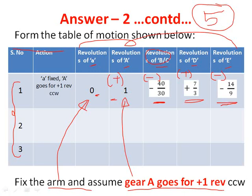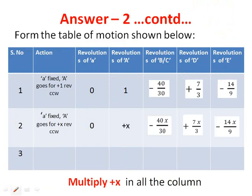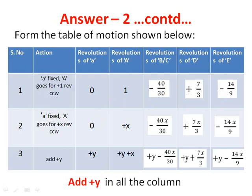This completes the first step. For the second step, multiply every element in the row by X: 0×X = 0, 1×X = X, −40/30×X = −40X/30, +7/3×X = +7X/3, −14/9×X = −14X/9. For the third step, add +Y to all elements: arm becomes Y, gear A becomes X+Y, BC becomes −40X/30+Y, gear D becomes +7X/3+Y, gear E becomes −14X/9+Y.